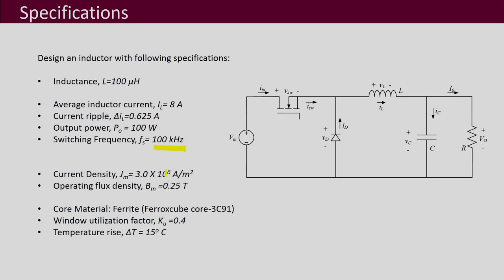For the design of the inductor, the current density is chosen as 3 × 10⁶ ampere per meter square, and the operating flux density is chosen as 0.25 tesla. We choose a ferrite core, which is reasonable because for this frequency range ferrite is very suitable. A window utilization factor of 0.4 is taken.